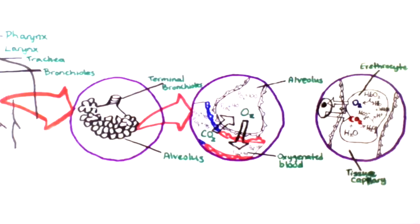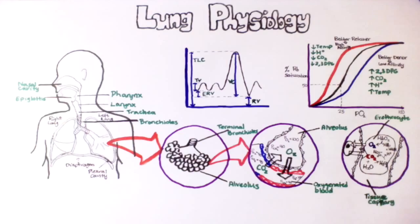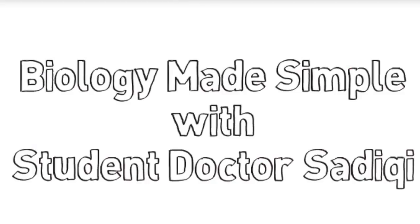Once the CO2 arrives inside the red blood cell, it interacts with water. H2O plus CO2 gives us carbonic acid. Carbonic acid then breaks down into H+ and bicarbonate. Bicarbonate is a great way of transporting carbon dioxide through the blood back into the lungs, and eventually through the same process is converted back to CO2 and is then exhaled. Thank you for tuning into Biology Made Simple.